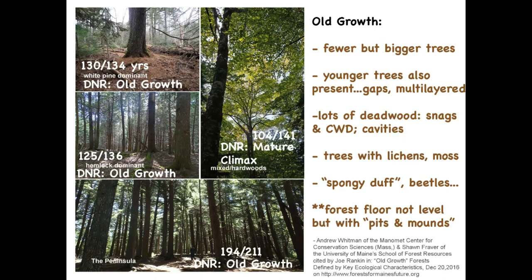What's exciting is that you have the mixed Acadian forest in all its different flavors — areas dominated by white pine, by hemlock, by hardwoods — all present in this forest. The peninsula forest has all the features of old growth: lots of deadwood, widely spaced trees, and importantly, a forest floor that is not level but has pits and mounds. That 211-year-old tree is the oldest one they measured at that site.